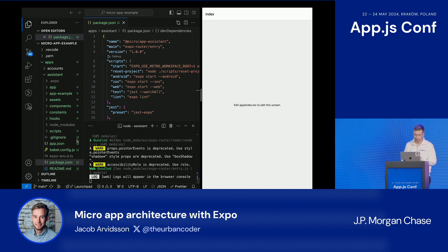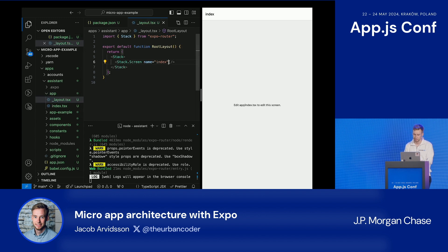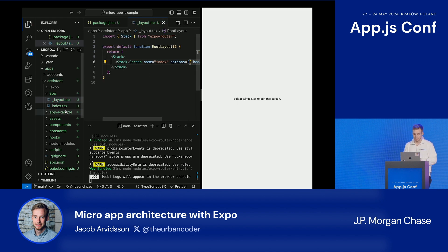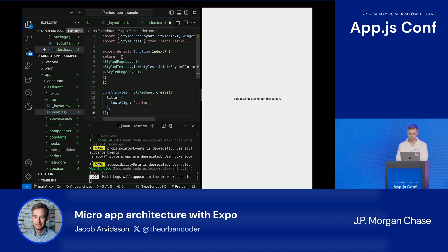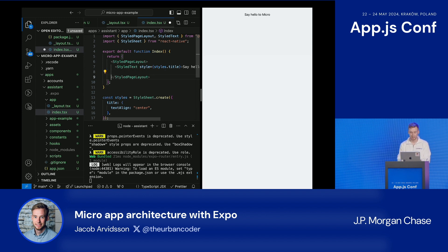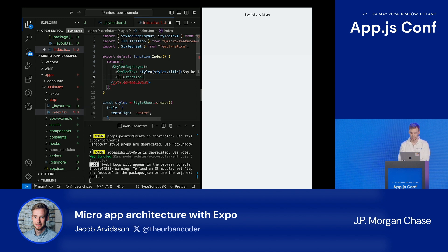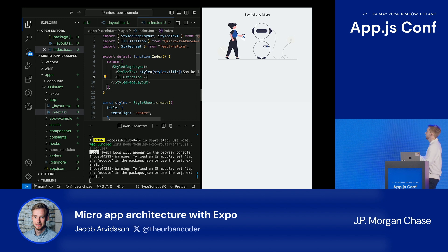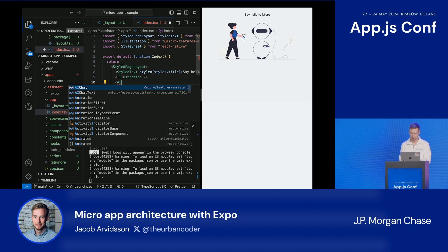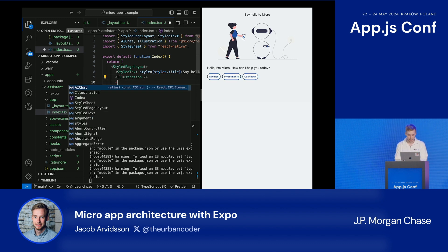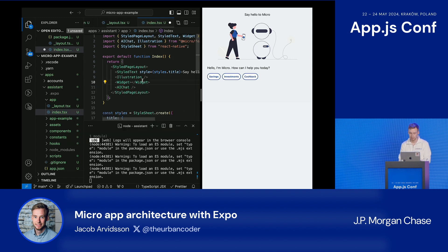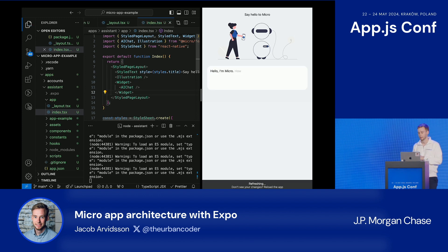Here's our micro-app — it's very easy to create. We don't need a tab bar in our new micro-app, just the website itself. Our team wants a nice illustration in the app, and our design system already has all of these illustrations, so we can just import that. Then let's add our AI chatbot — I'm not going to write it today, so I'll just import it from the feature package. Let's wrap it in a design system component to make it look like our banking app.